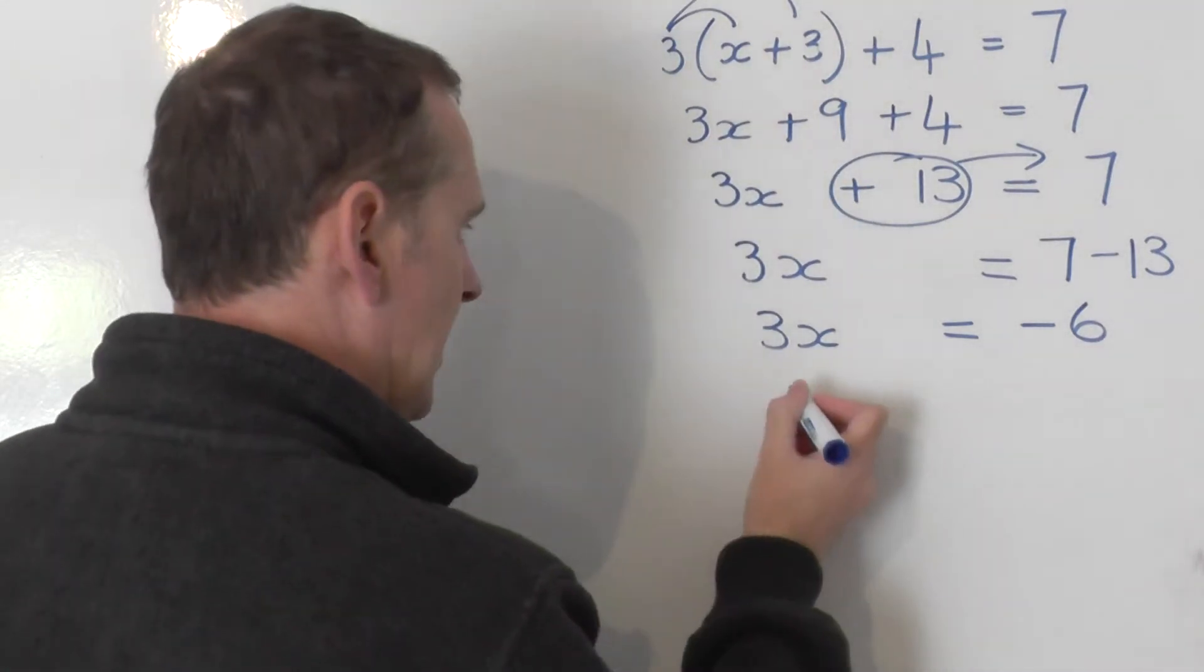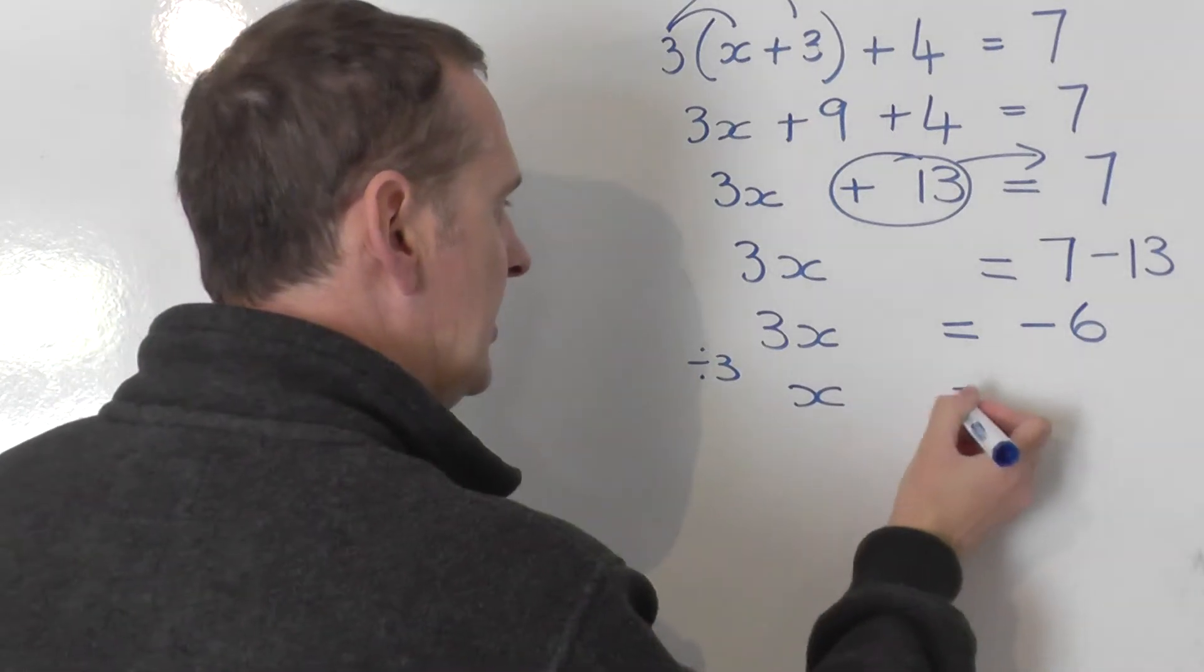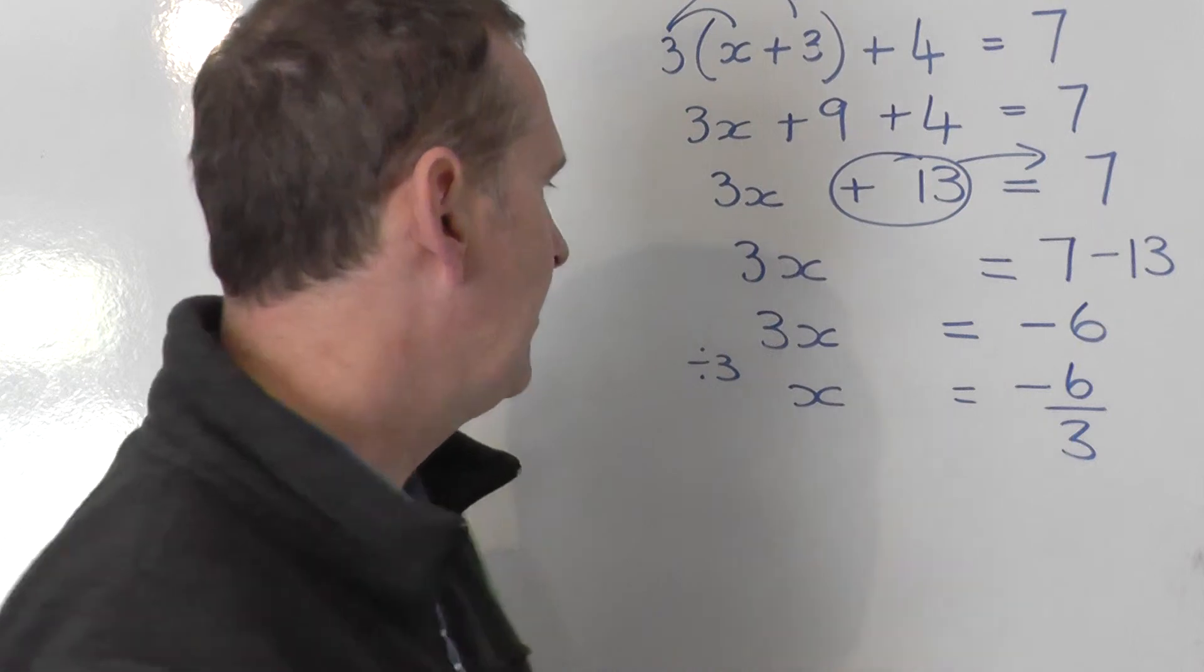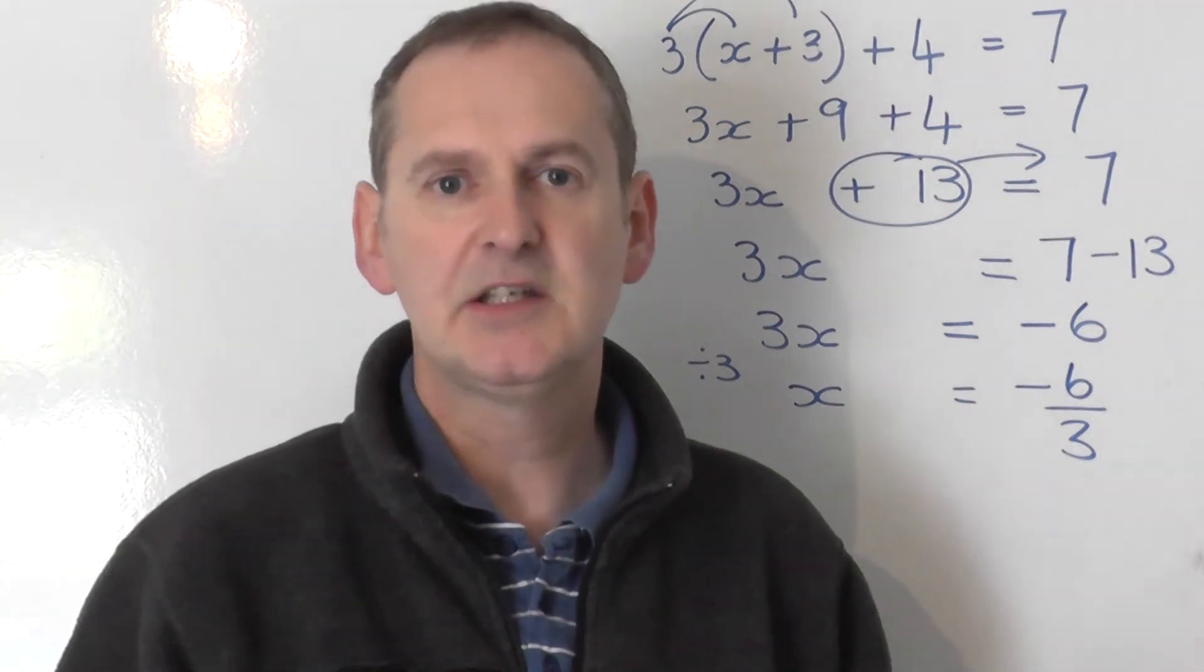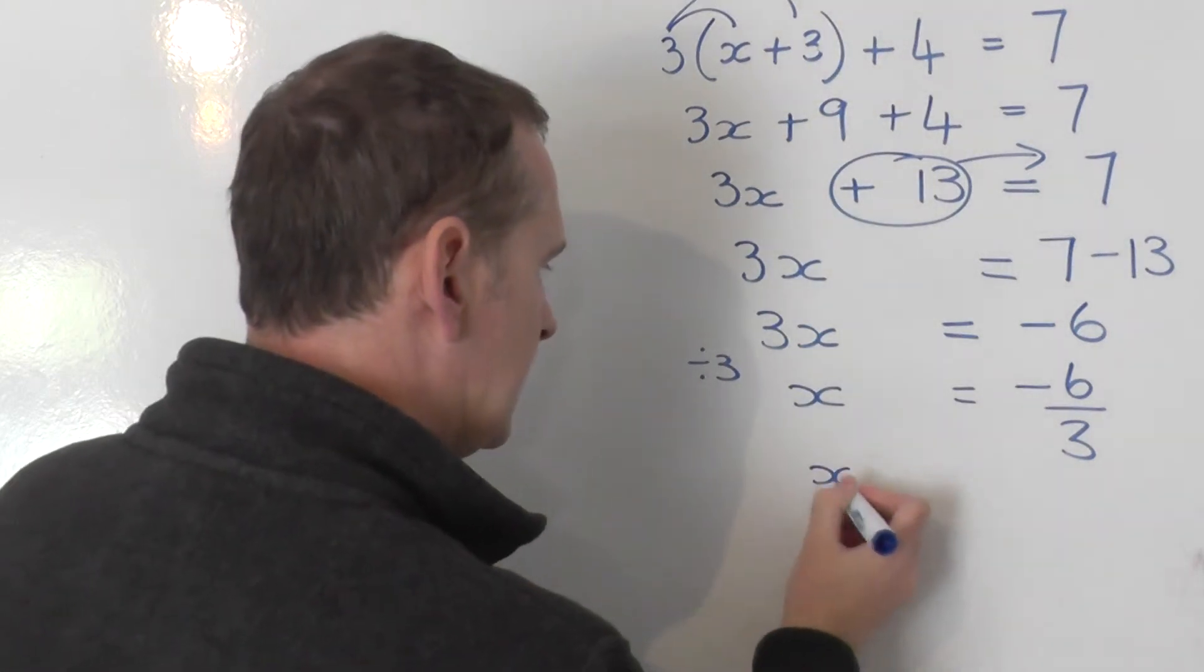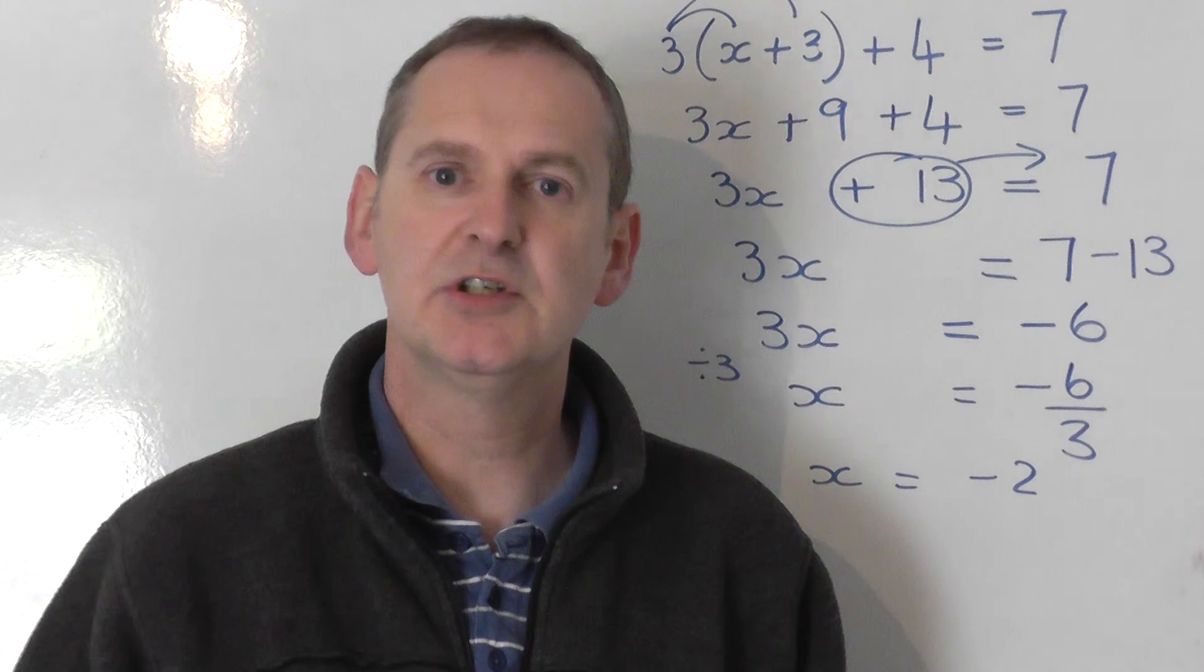But I don't want 3x, I want x. To go from 3x to x, you share by 3. So you take the negative 6 and you need to share that by 3 as well. Negative 6 share by 3 gives you a nice integer answer. x turns out to be a negative 2. And that is the solution to that equation.